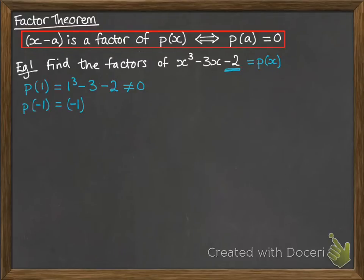If you put -1 in, then you get 0. So -1 tells us that if we can put -1 in and we get 0, then x minus that value, so x minus -1, is a factor. So that's x plus 1.